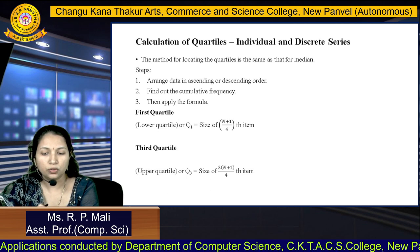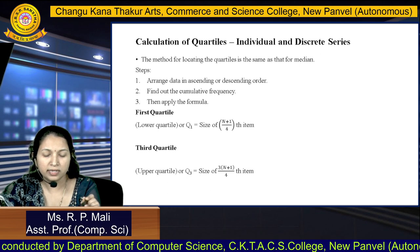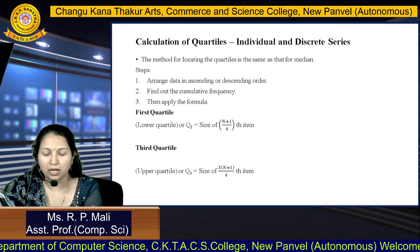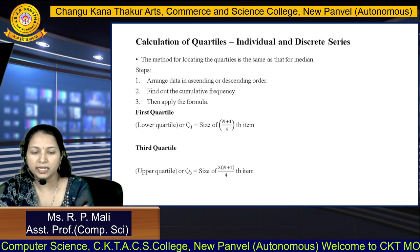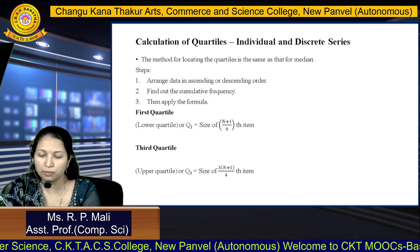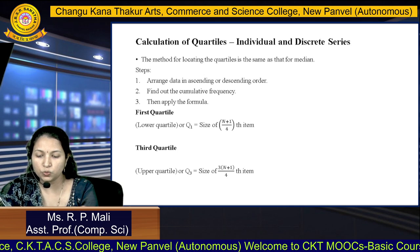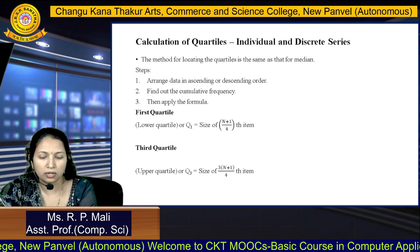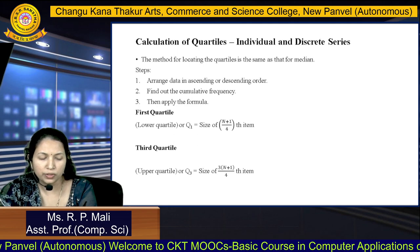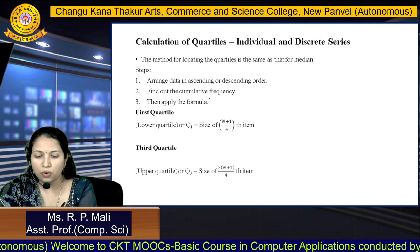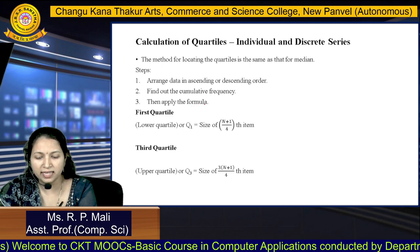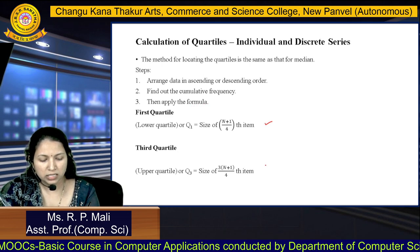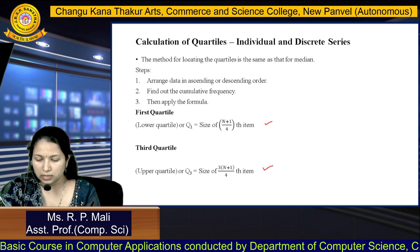We are going to find the quartile for individual or a discrete series. The formulas are the same as your median. The method of locating the quartile is the same as your median. The first step is to arrange the data in ascending or descending order — here we are going to arrange in ascending order. Then find out the cumulative frequency and apply the formula. This is the formula for your first quartile and this is the formula for your third quartile.